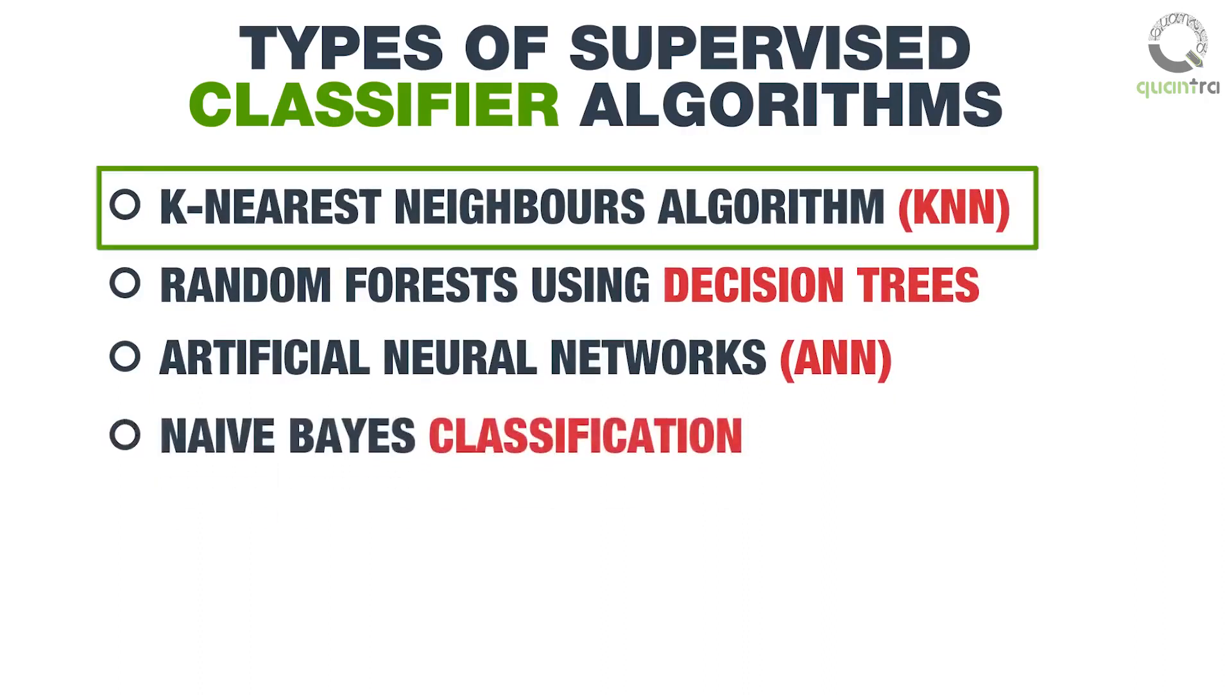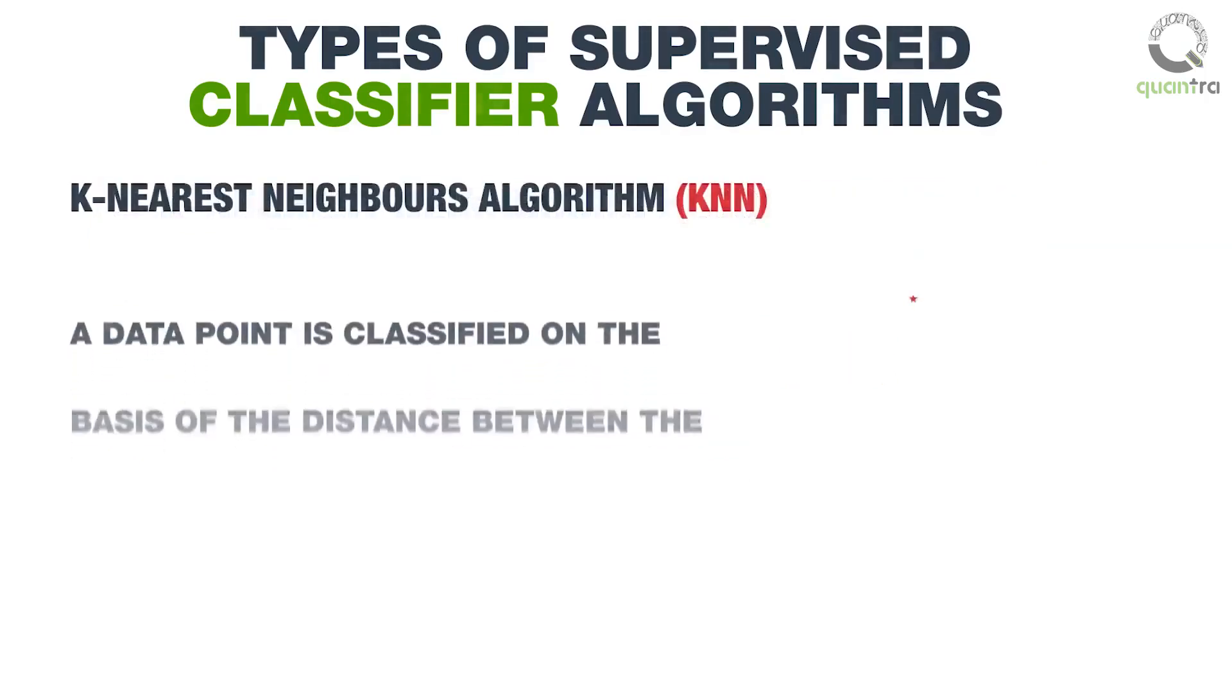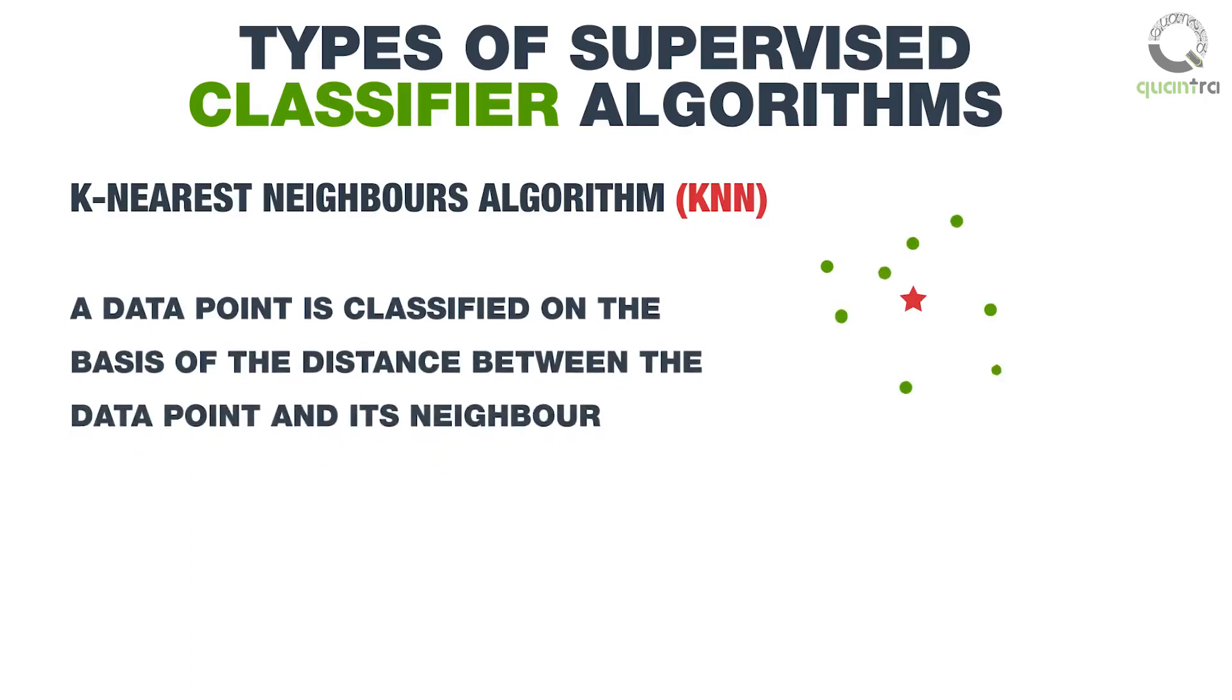First, let us learn about the K-Nearest Neighbors Algorithm, or KNN. In KNN, a data point is classified on the basis of the distance between the data point and its neighbor.